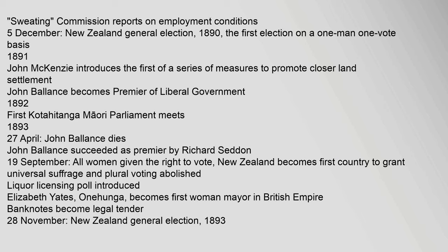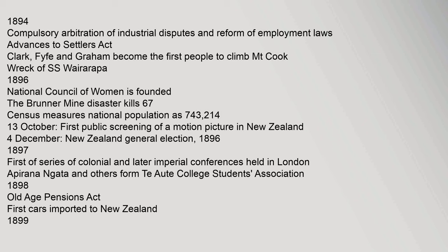28 November: New Zealand general election, 1893. 1894: Compulsory arbitration of industrial disputes and reform of employment laws. Advances to Settlers Act. Clark, Fyfe and Graham become the first people to climb Mount Cook. Wreck of SS Wairarapa. 1896: National Council of Women is founded. The Brunner Mine disaster kills 67. Census measures national population at 743,214. 13 October: First public screening of a motion picture in New Zealand.